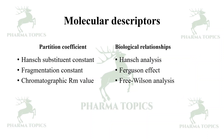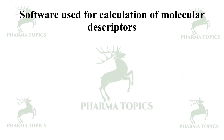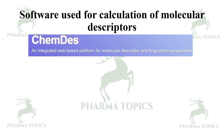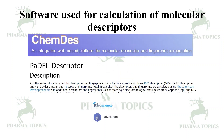Partition coefficient molecular descriptors include Hansch fragmentation constants and chromatographic Rm values. Biological relationships are represented by Hansch analysis, Swain-Lupton effect, and Free-Wilson analysis. Software for calculation of molecular descriptors includes ChemDes, PaDEL Descriptor, and the newer AlvaDesc — which is free for academic use with a license application.